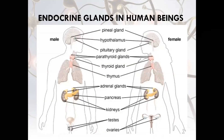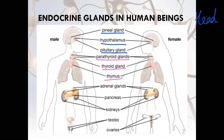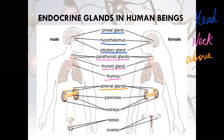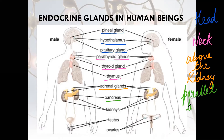Here in the figure we can see different kinds of endocrine glands: pineal gland, hypothalamus, and pituitary gland — these glands are located in the head region. Whereas parathyroid, thyroid, and thymus are located in the neck region. Adrenal gland is located above the kidney. Pancreas is in the abdomen region, located parallel to the stomach.